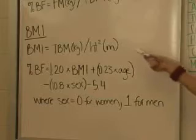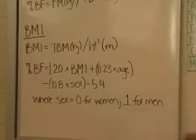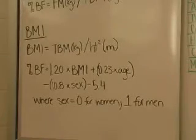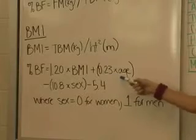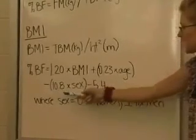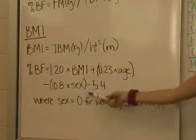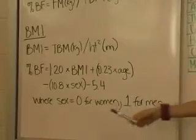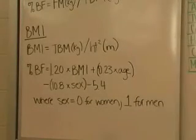Once you have your value of BMI, you can calculate percent body fat by taking 1.2 times the BMI, plus 0.23 times the individual's age, minus 10.8 times their sex, minus 5.4, where sex is going to equal 0 for women and 1 for men.